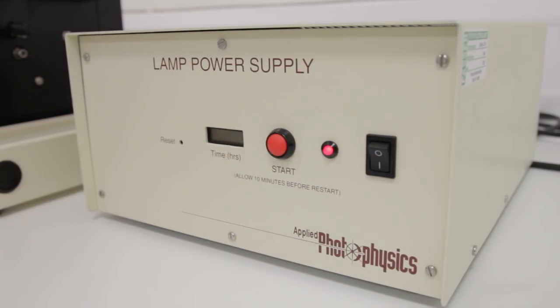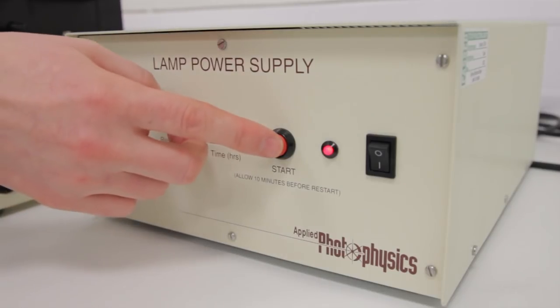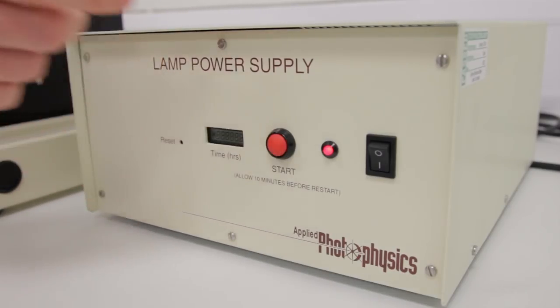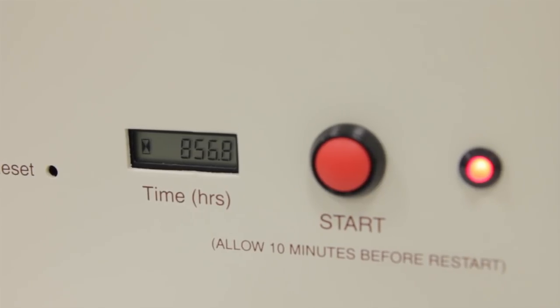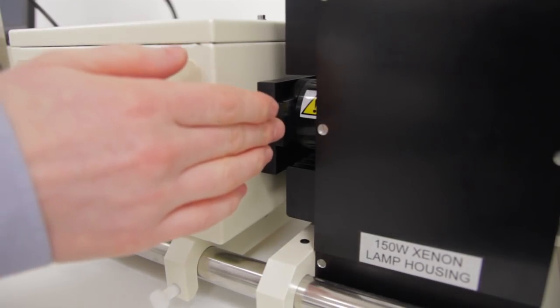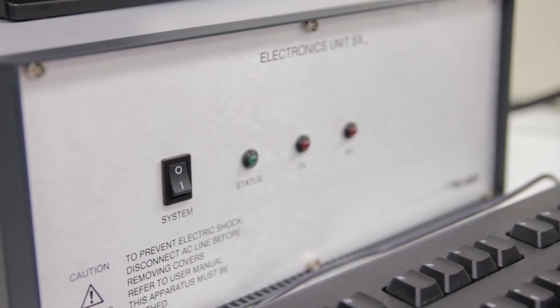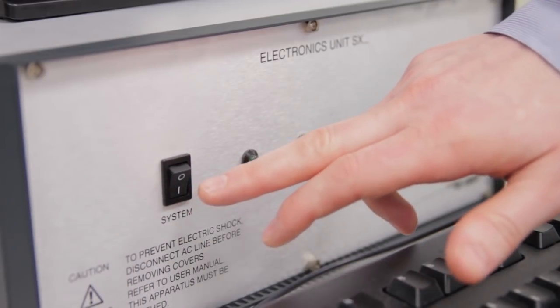Usually the first thing we need to do is switch on the lamp as this takes 20 minutes or so to stabilize. Make sure the shutter is in the open position. We then need to turn on the electronics rack and start the software.